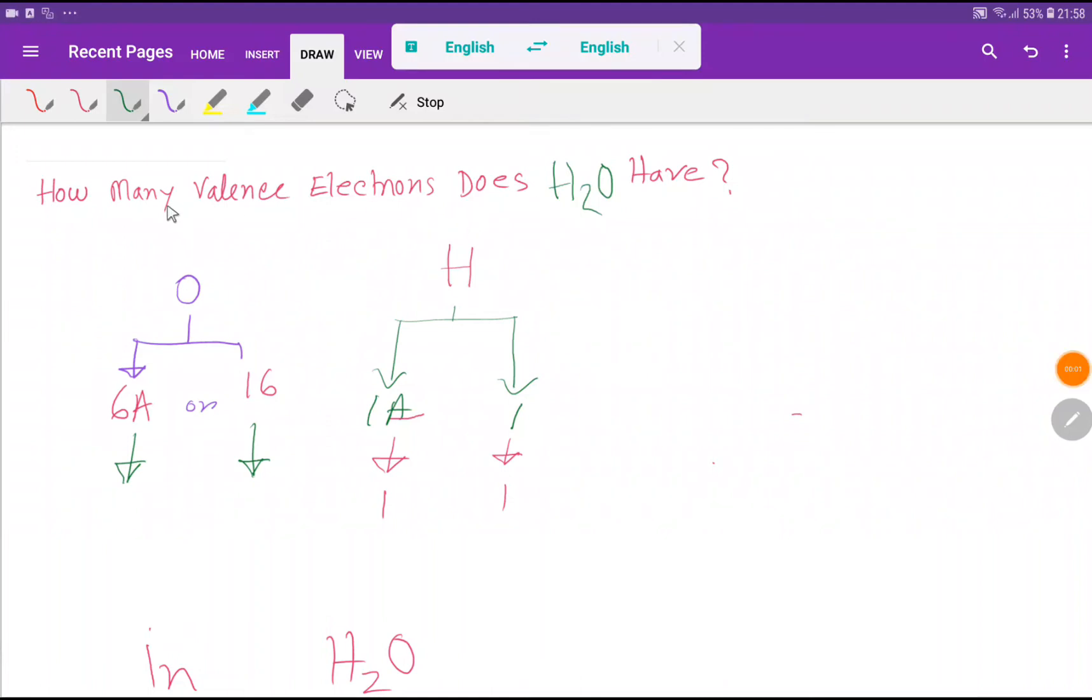Ladies and gentlemen, welcome to Chemistry Tutorial 360. Today we're going to answer the question: how many valence electrons does water have? In water we have hydrogen and oxygen atoms. We know that valence electrons equal the group number.